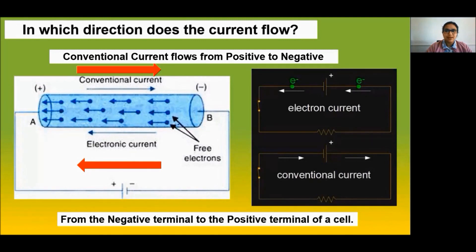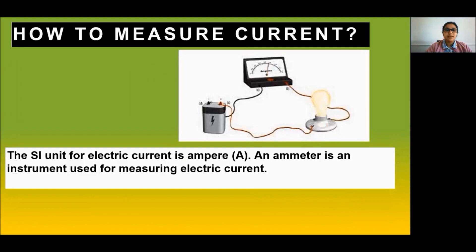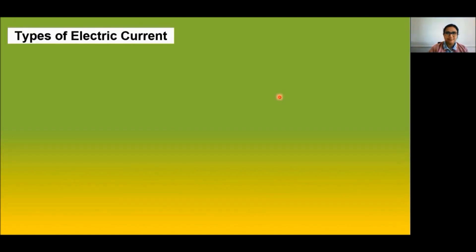How do we measure current? Current can be measured using an ammeter. The SI unit of current is ampere. Smaller quantities of current are measured in milliampere or microampere. One ampere is equal to 1000 milliampere.